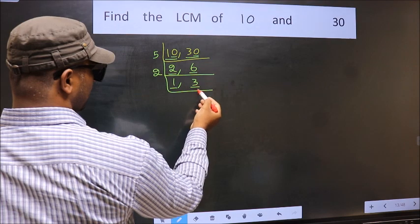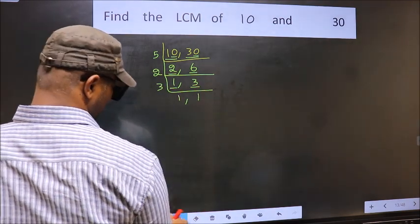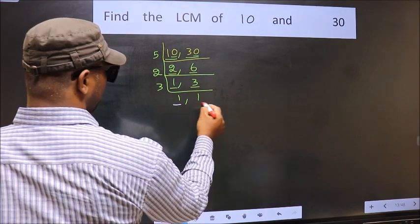So focus on the other number 3. 3 is a prime number. So 3 times 1 is 3. So we got 1 in both places.